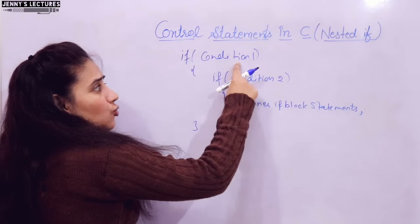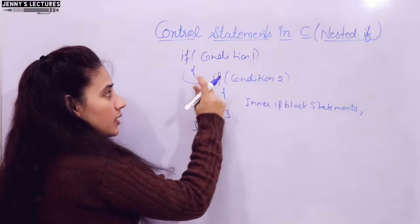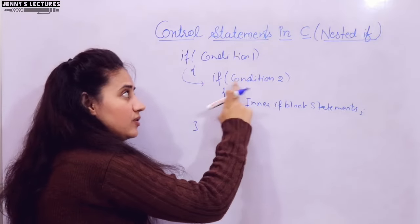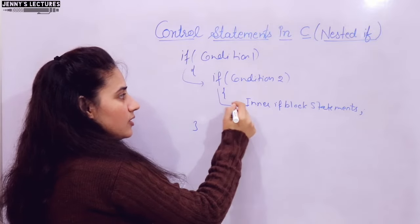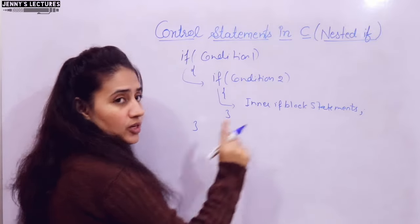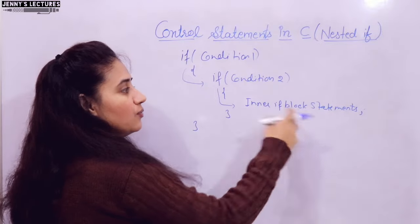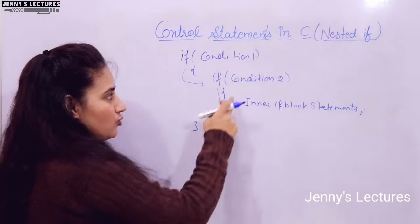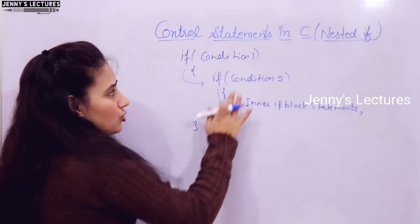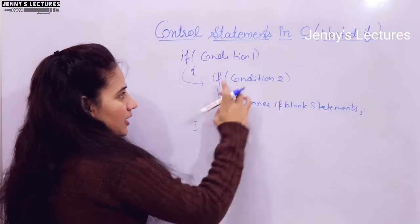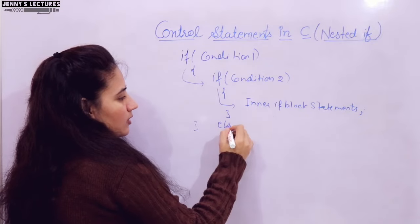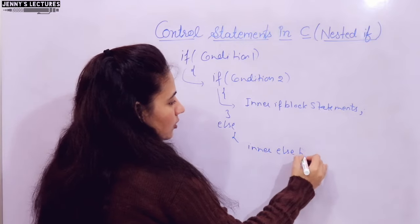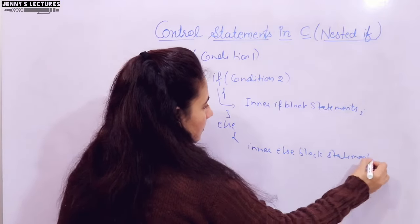If condition 1 is true, then only control will go into that outer if block, and then condition 2 will be checked. If condition 2 is also true, control goes into the inner if block and those statements are executed. I'm writing curly braces because there are multiple inner if block statements. If there is only one statement, you can remove the curly braces.